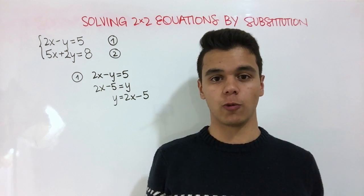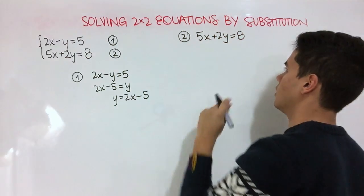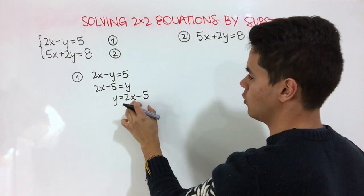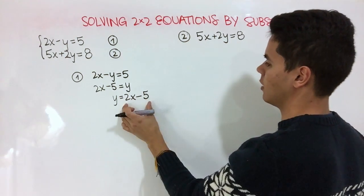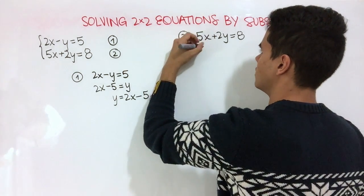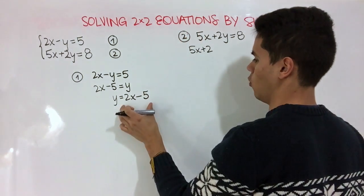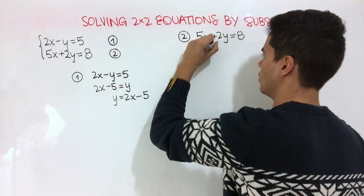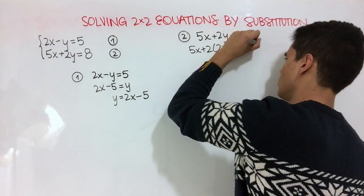Now we're going to sub in what we got here in the other equation. So we know that y is equal to 2x minus 5. So we're going to rewrite this, just sub it in for y. So we end up with 5x plus 2 times 2x minus 5, and that's equal to 8.